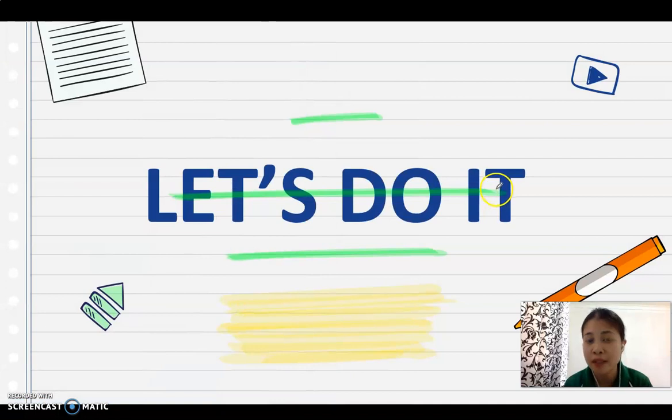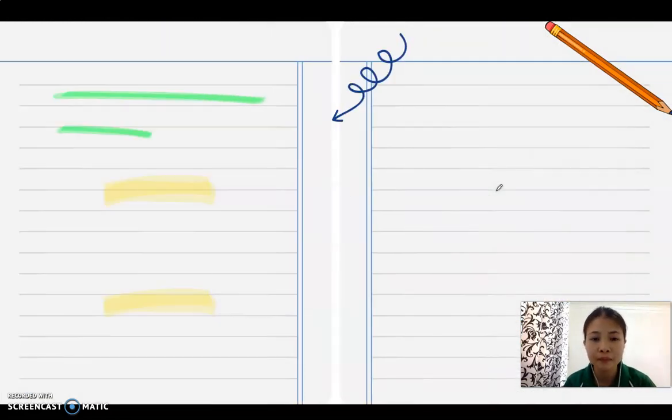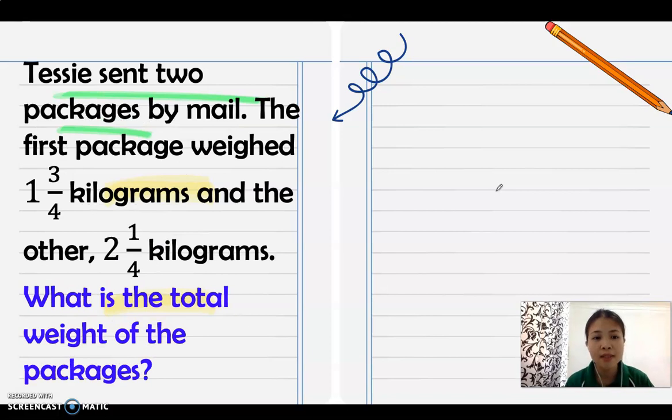Now let's have more examples in solving word problems. This one deals with addition or subtraction or both. Jessa sent two packages by mail. The first package weighed 1 and 3/4 kilograms and the other is 2 and 1/4 kilograms. What is the total weight of the packages?